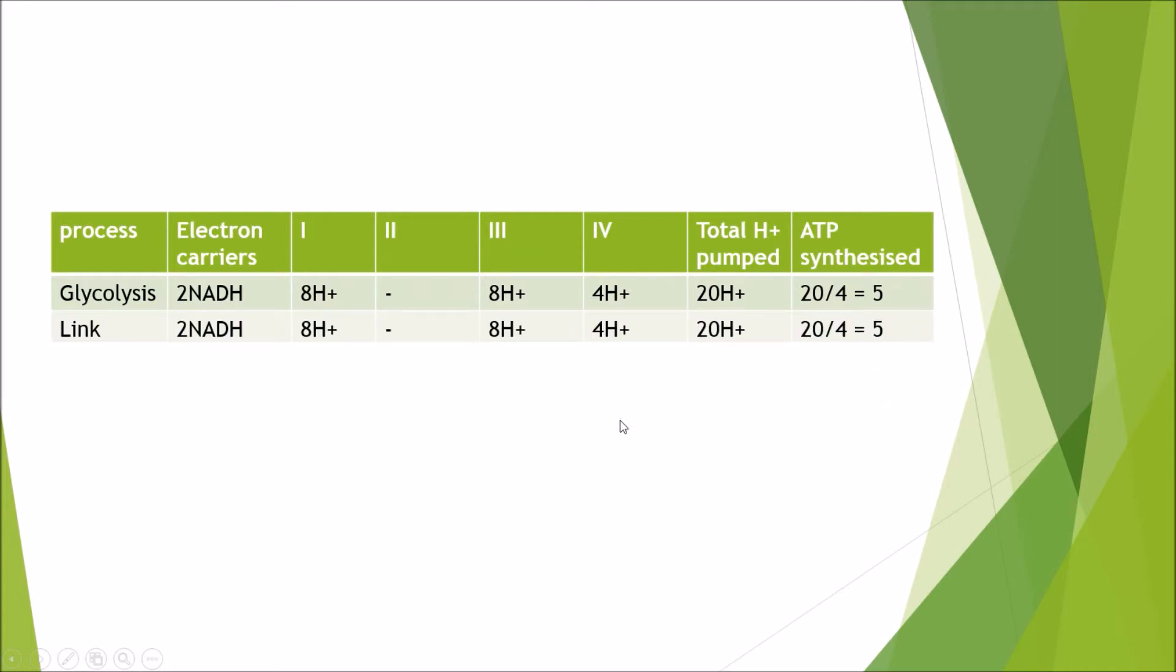Then we're going to move on to the link reaction. During the link reaction, for every pyruvate going into acetyl-CoA, we get one NADH molecule. But if you remember correctly, we get two pyruvates per molecule of glucose, which means we get two NADH molecules. And again, all the hydrogen ions coming up, we get five ATPs derived from the link reaction.